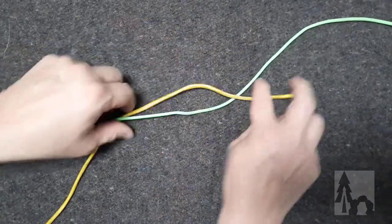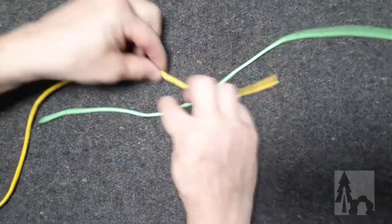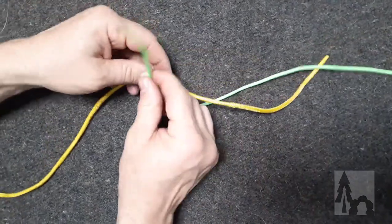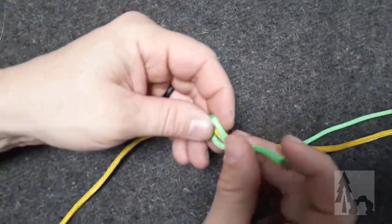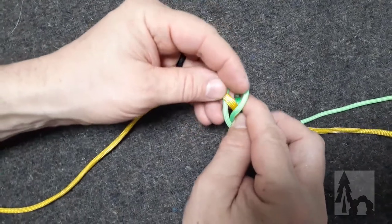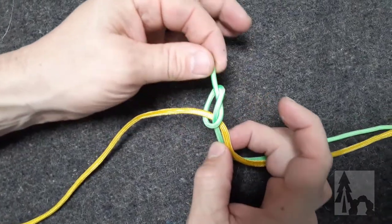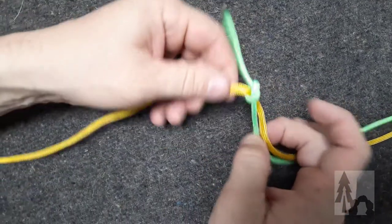So I'm going to lay the lines so they're parallel to each other and passing. I'm going to take my green, cross over, and I'm just going to tie a simple overhand knot around the yellow cord.